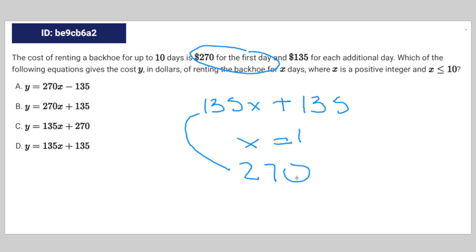Even if you just guessed and checked, you could probably still get the right answer for this question. Because, let's look at A. If you put in 1 for A, you're going to get the answer of $135, which is definitely not equal to $270. So A can't be the right answer.